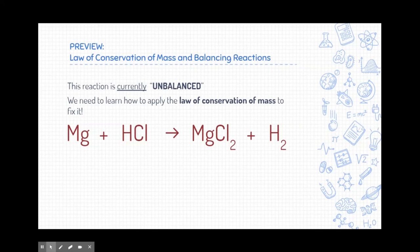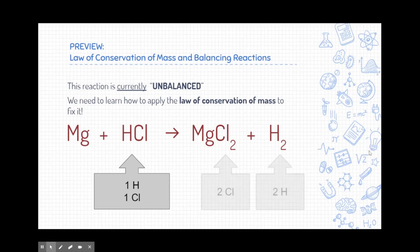Before we end, I want to go back to this reaction and just talk about how it's currently unbalanced. Now, what do I mean by that? Well, if we take a look here on the left side of the reaction or the reactants, we have one hydrogen and one chlorine. In the product side, however, we have two chlorines and two hydrogens. Now, we didn't mess up this reaction. We have written it correctly. It's just not finished. It's unbalanced in terms of the reactants and products. Remember, those reactants become those products. So, where do these extra chlorines and hydrogens come from? Well, we need to learn how to apply something called the law of conservation of mass to fix it. And we're going to talk about that more in a later set of notes.